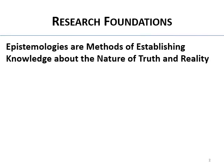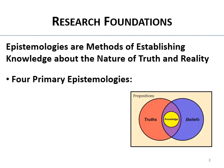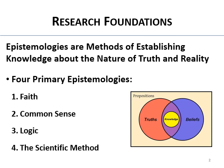First I want to talk about epistemologies. What are epistemologies? They're ways that we establish knowledge about the nature of truth and reality. There are generally four primary epistemologies: number one is faith, two is common sense, three is logic, and four is the scientific method.